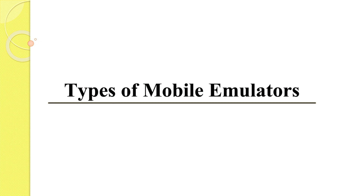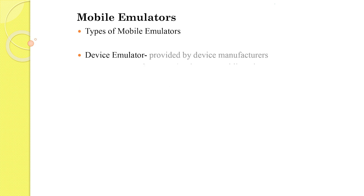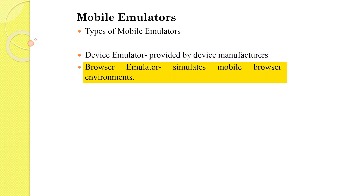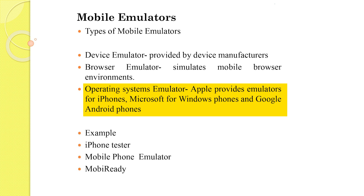There are different kinds of mobile emulators: device emulators, browser emulators, and operating system emulators. Device emulators give you the feel of the exact device. Browser emulators simulate mobile browsers in different environments. Operating system emulators — for example, Apple provides emulators for iPhone, Microsoft for Windows Phone, and Google for Android phones.